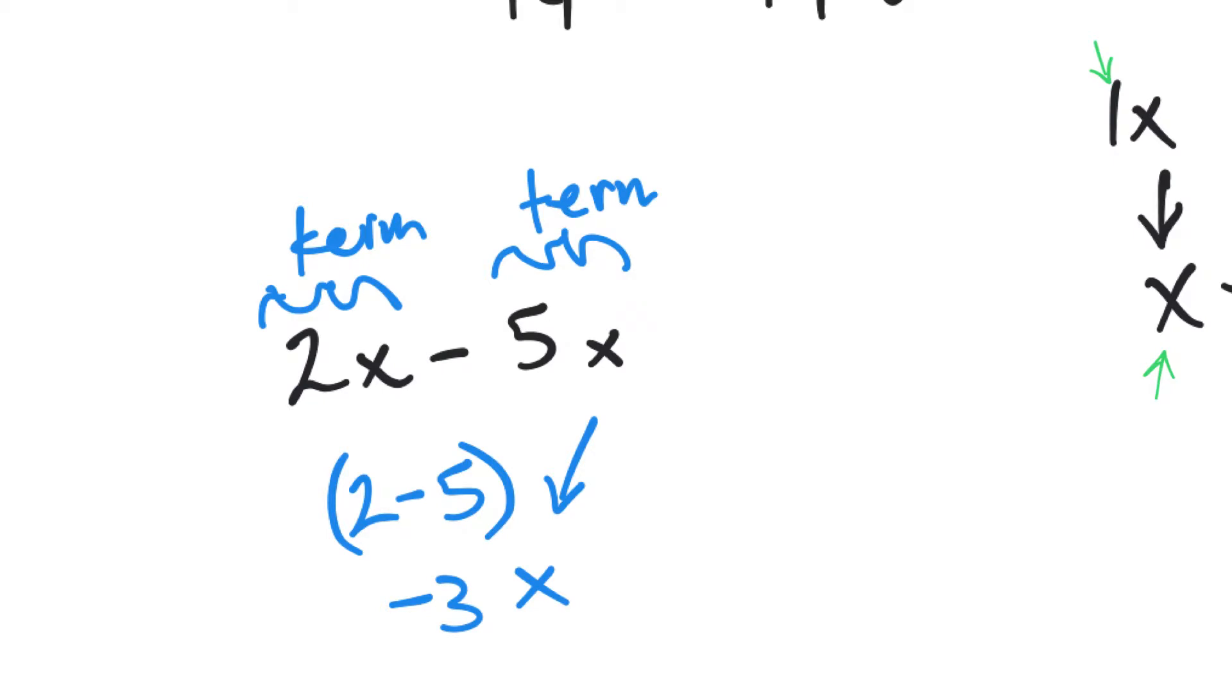Well, what we could do is we could rewrite this as 2x plus a negative 5x, right? And if I put this in parentheses, I would do that simply because I'm separating the operation of addition from the sign of the negative. And so we can see here that this is actually, this survives as a negative 5.